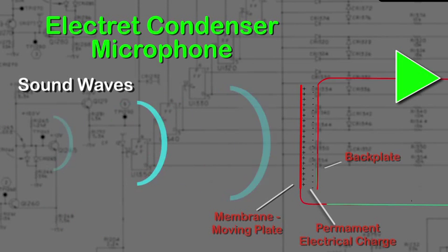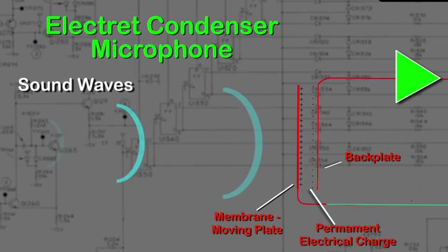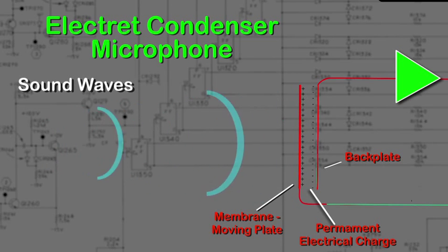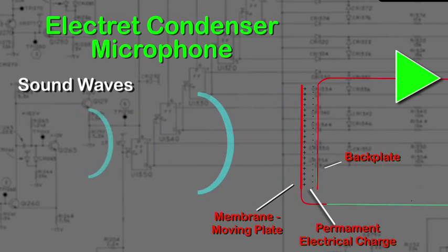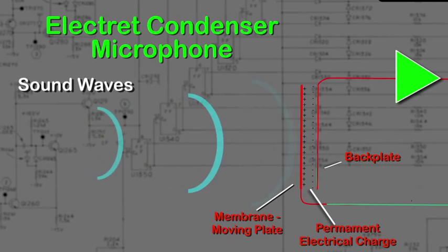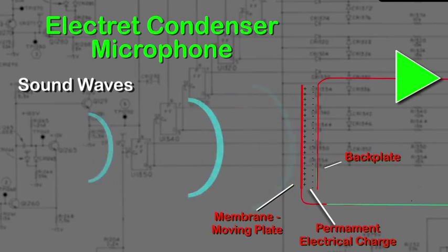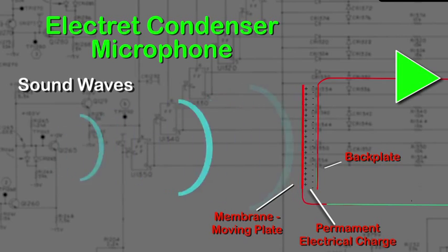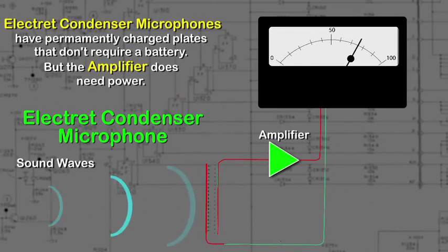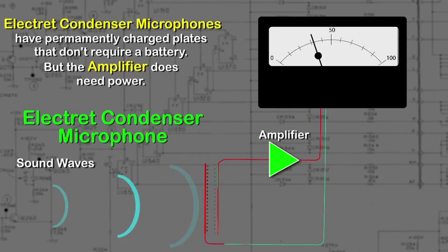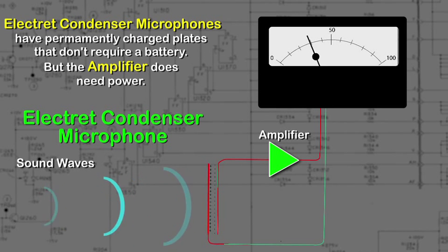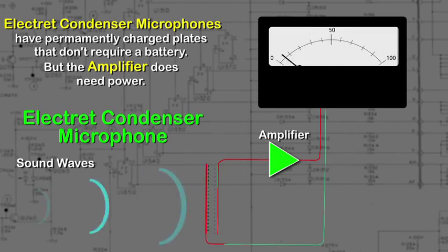Another type of condenser microphone is the electret condenser. This means that the two plates — the membrane and the backplate — are charged permanently and do not require any power. But once again, the output will be very small and does require an amplifier at its output. So power is still required for the microphone, if not for the plates.